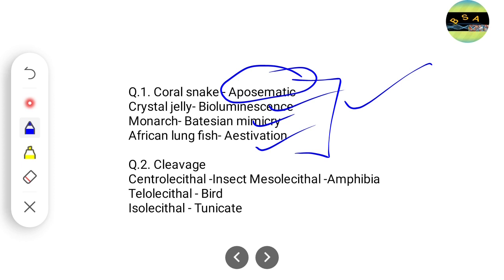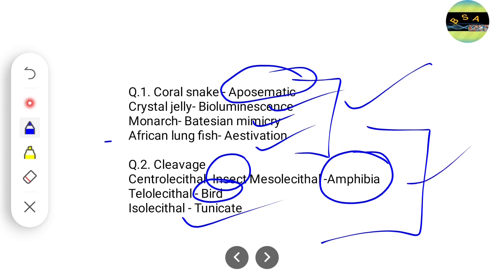They asked a question on cleavage. Centrolecithal cleavage is for insects, mesolecithal cleavage is for amphibia, telolecithal is for birds, and isolecithal cleavage is for tunicates. We've been reading these from zoology from BSc level. This is a simple question. These are the answers, but we have doubt about the previous question.